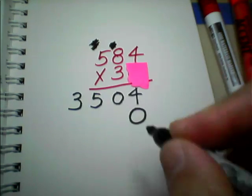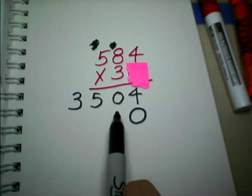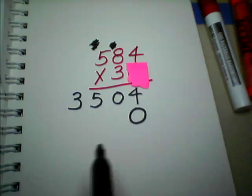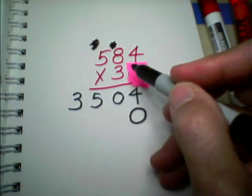We pop in a 0 right underneath our first subtotal. So, that everything that we put in these places will actually be multiplied by 10. So, we can just now look at this as 584 times 3. So, let's do it.